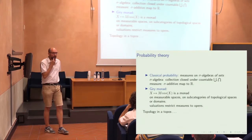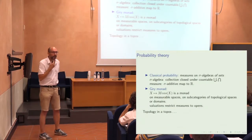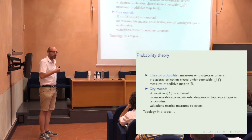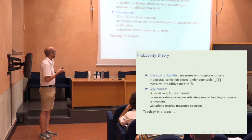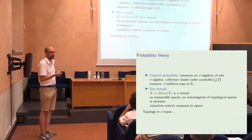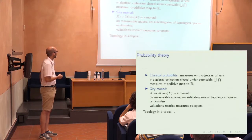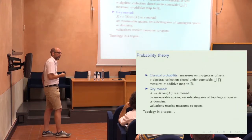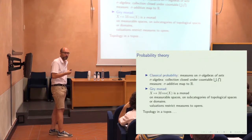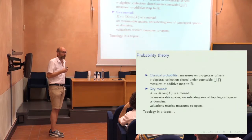If you look at classical probability, it would be modeled by classical measure theory — you look at measures on a sigma algebra of sets. A sigma algebra is a collection of sets closed under countable union and countable intersection, and a measure is a sigma-additive map. Because we're in a topos theory setting, we're going to do this more localically — first categorically.